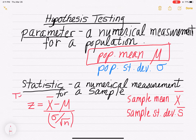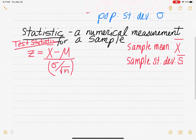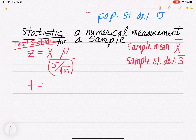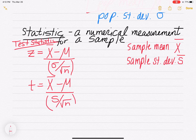We call that z a test statistic. We also had another one called a t-score. A t-score is used when you don't have the population standard deviation — you have a sample standard deviation instead. So if you have a sample mean x-bar and want to convert it to a test statistic, you use t equals x-bar minus the population mean divided by s over the square root of n. This gives you the t-test statistic. So we've seen both z's and t's.